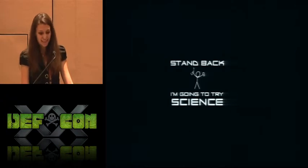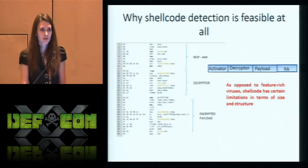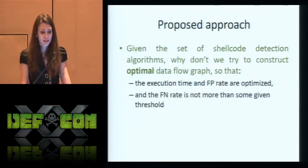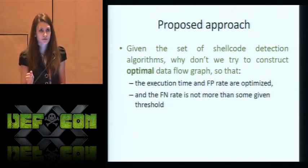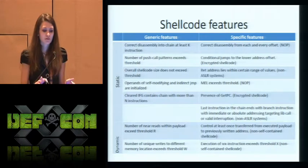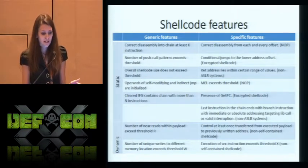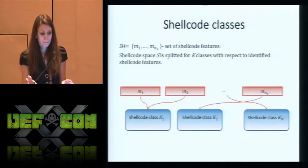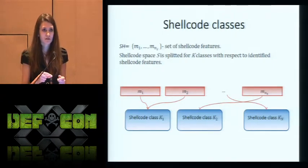Now I'm going to try a little bit of science. That's why shellcode detection is feasible at all: in contrast to viruses which are rich with features, shellcodes have certain size limitations and structure limitations. Given a set of shellcode detection algorithms, why don't we try to construct a classifier which is optimal in terms of false positive rate and execution time — while not forgetting false negative rate? At the first step, we try to identify shellcode features — they could be generic or specific. Some can be detected only by static analysis, some only by dynamic analysis. Given such a set of features, we can divide the shellcode space into several classes, where one class can include one or more shellcode features.